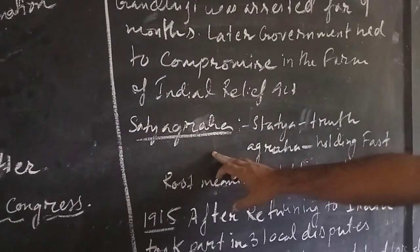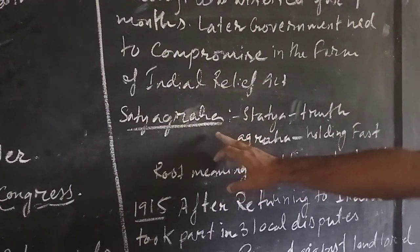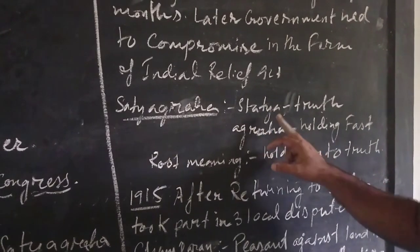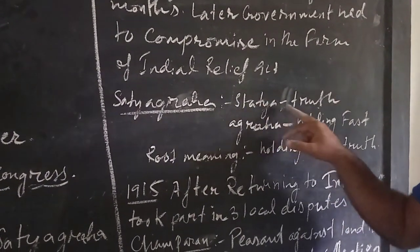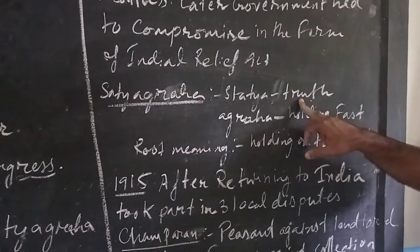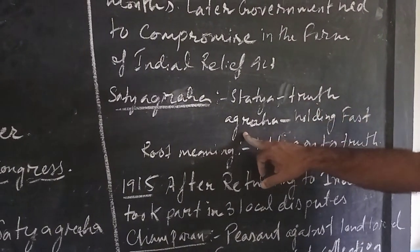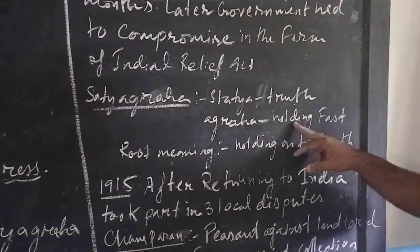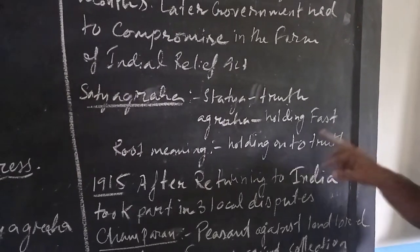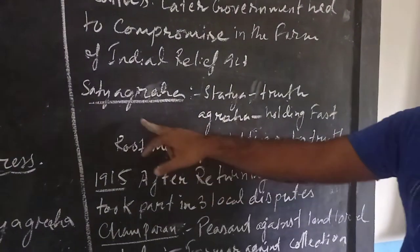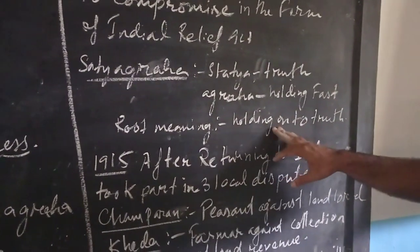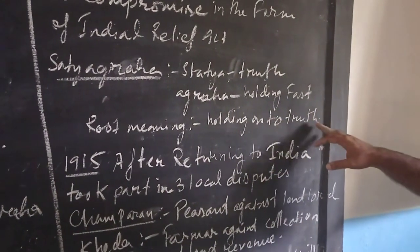What is Satyagraha? Satyagraha is made of two words: Satya and Agraha. Satya is a Hindi word that means truth. Agraha means holding fast. So the root meaning of Satyagraha is holding on to truth.